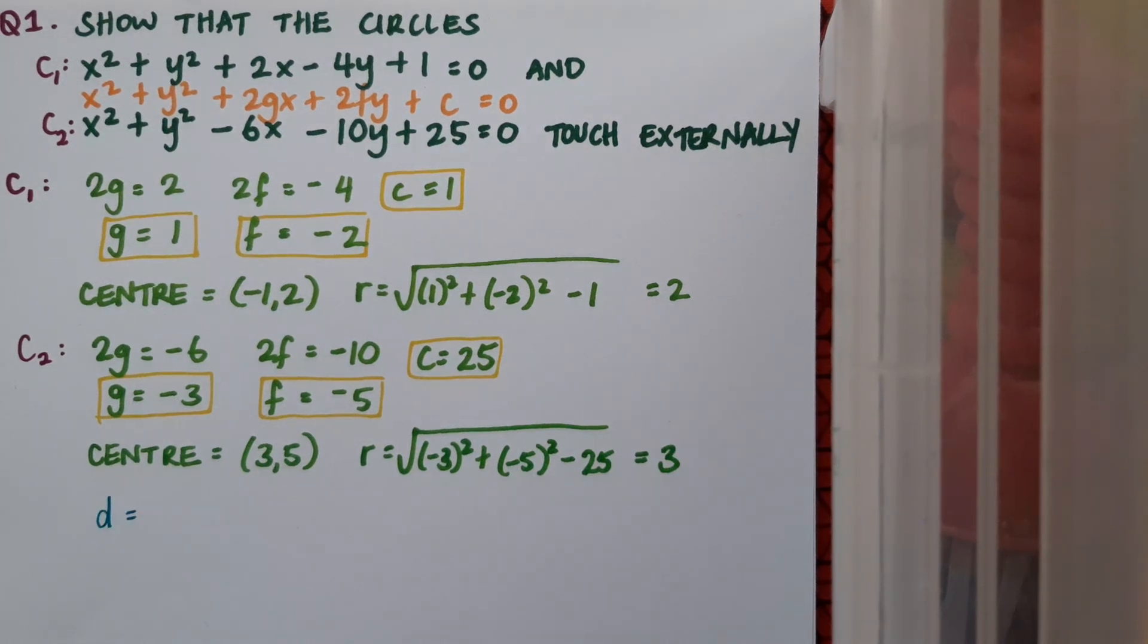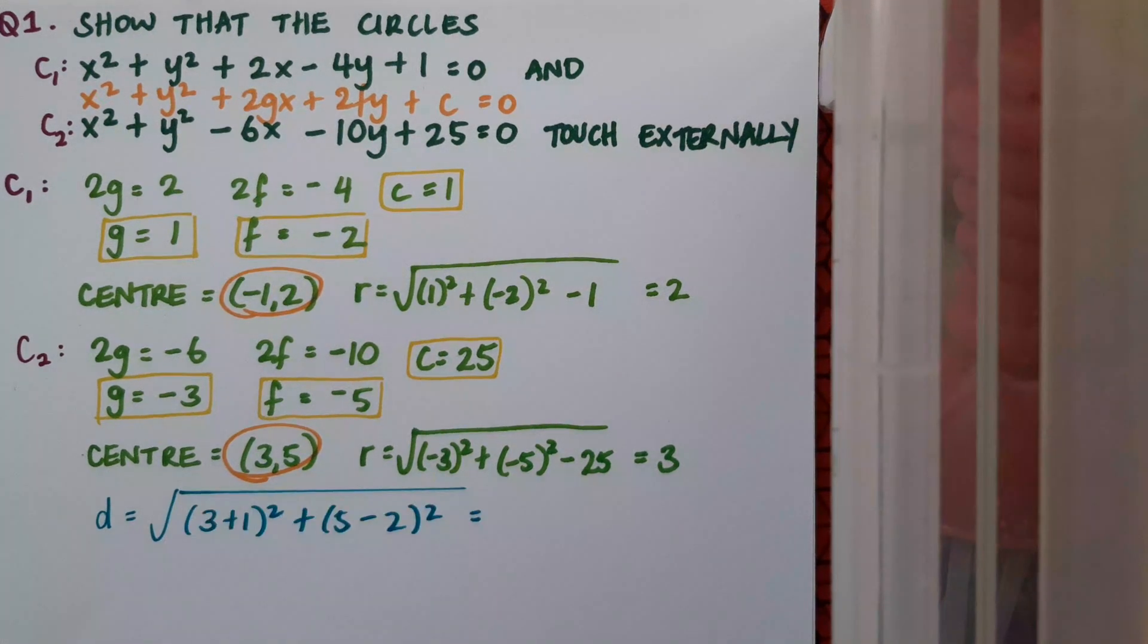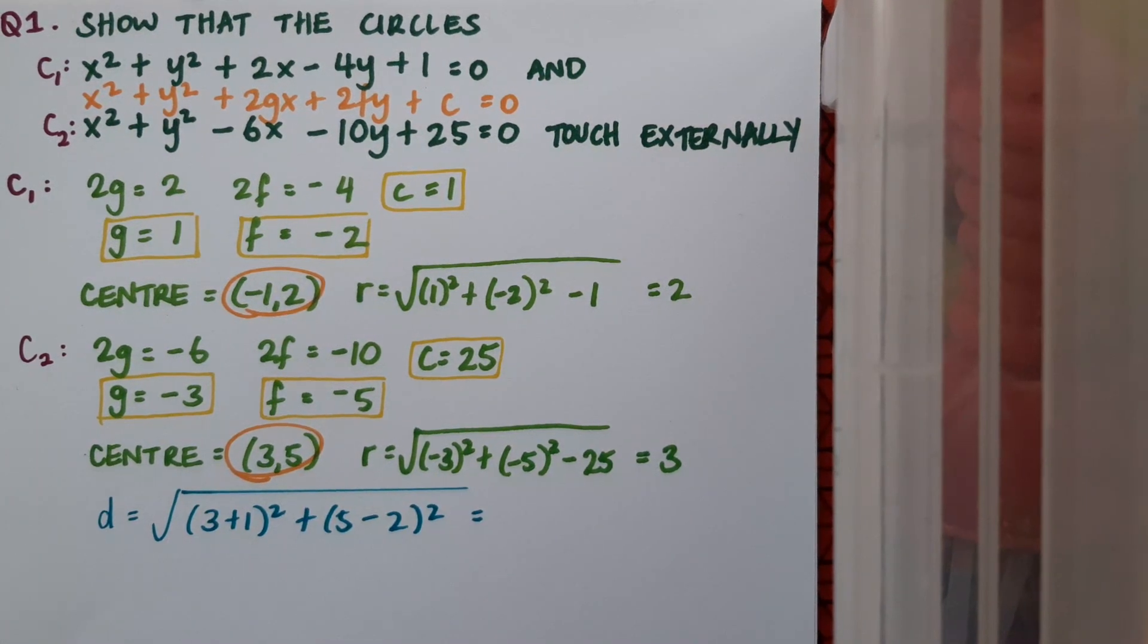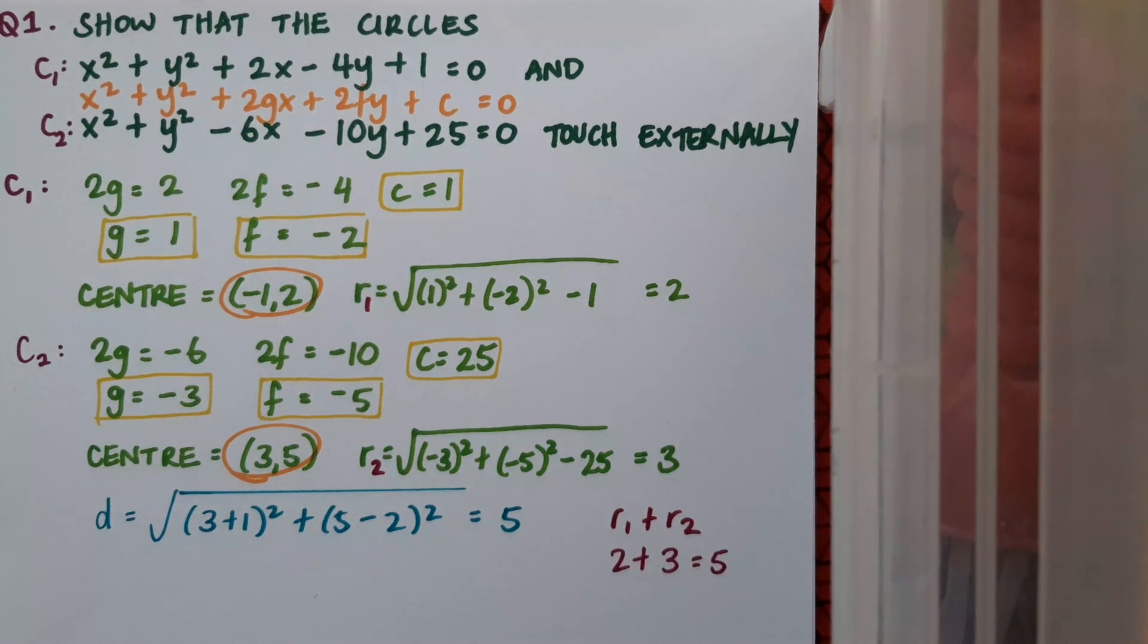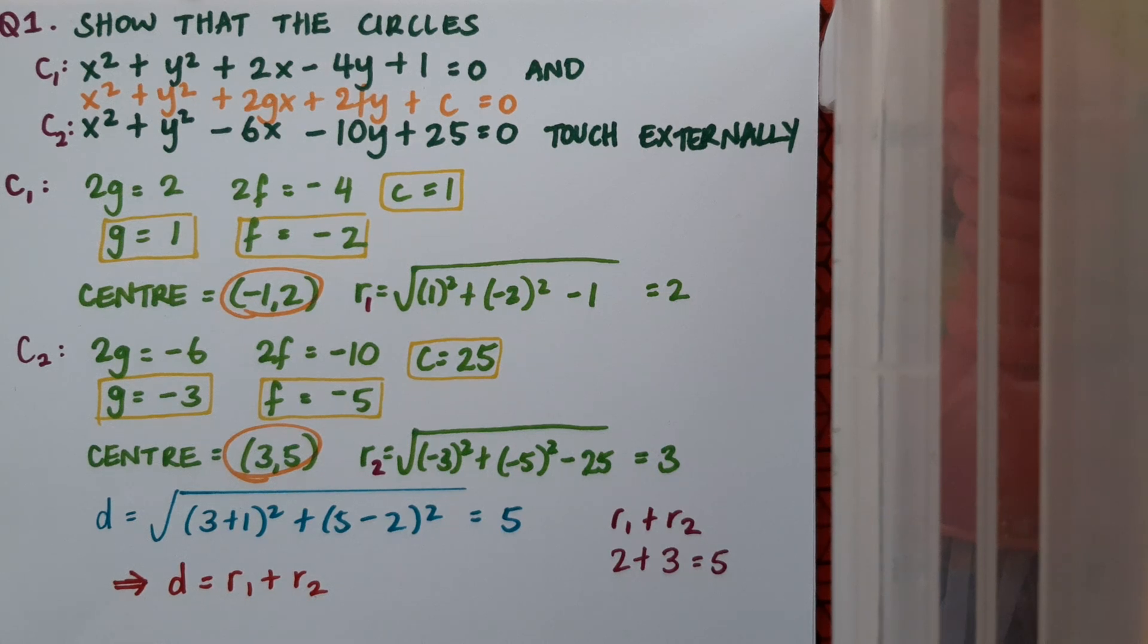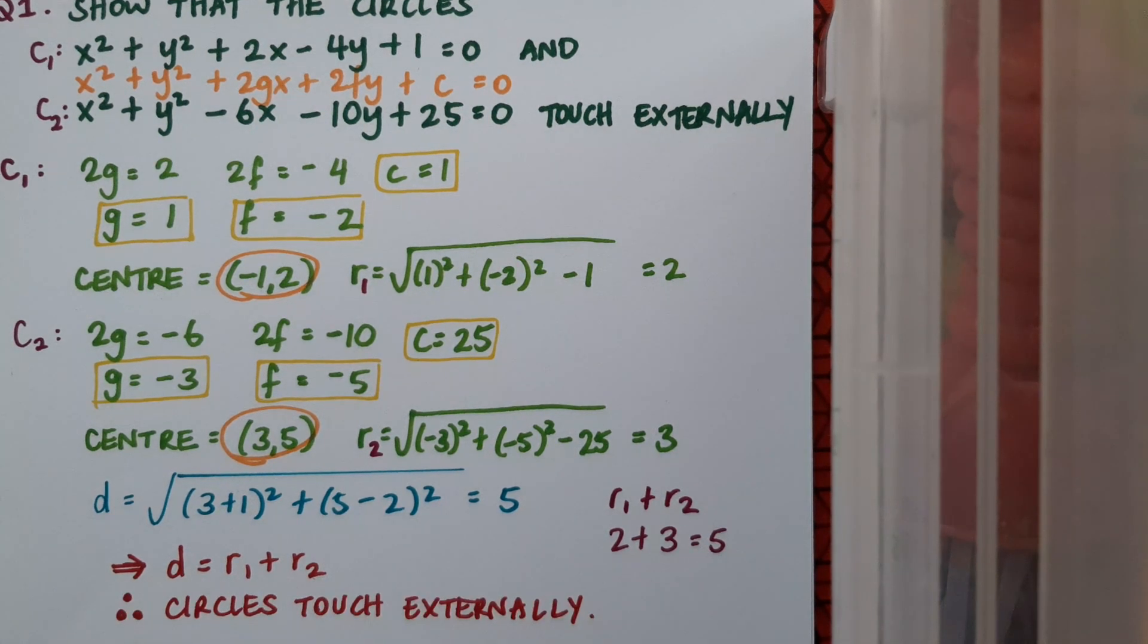Now I'll find the distance between my centres and this works out as 5. Of course looking at my radii I see that I get the same value. So I know that the distance between the centres is r1 plus r2 and so the circles touch externally.